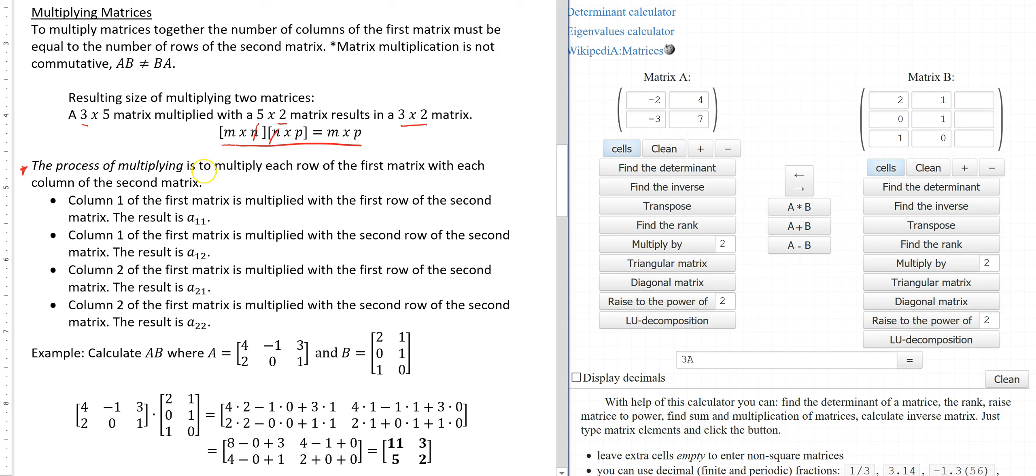The process of multiplying is to multiply each row of the first matrix with each column of the second matrix. So for example if I take column one of the first matrix that needs to be multiplied with the first row of the second matrix. Let me highlight those. The first row needs to be multiplied with the first column. Now down below I've shown you those details. I'll get to them in a moment.